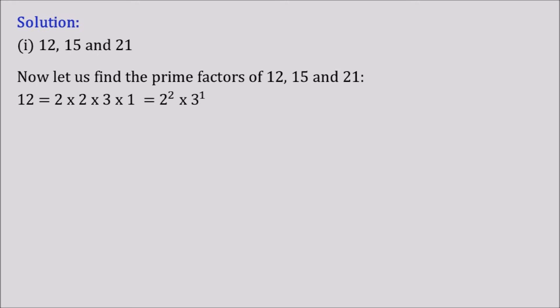Both 2 and 3 are prime numbers. Now coming to the number 15, we get 3 × 5 × 1, and the prime factors are 3 to the power 1 into 5 to the power 1.